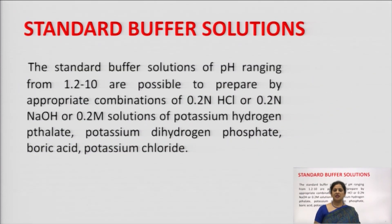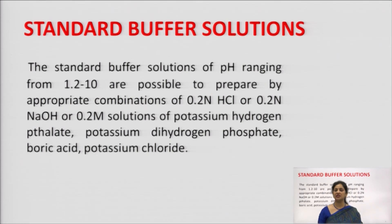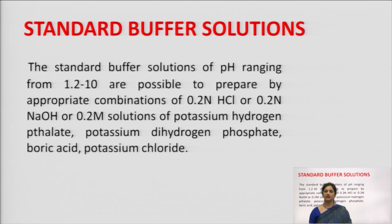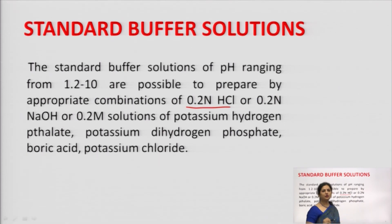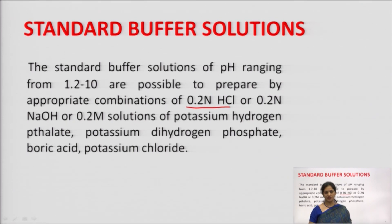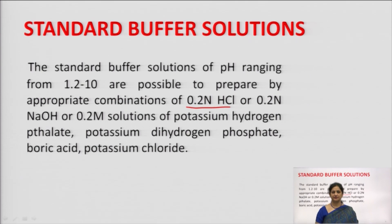Standard buffer solutions are solutions used as buffers with a definite pH range, prepared for use in pharmaceutical dosage forms. These are prepared by formulas given in official literature such as the Indian Pharmacopoeia. Standard buffer solutions of pH ranging from 1.2 to 10 are possible to prepare using appropriate combinations of 0.2 N HCl, 0.2 N sodium hydroxide, or 0.2 molar solutions of potassium hydrogen phthalate.